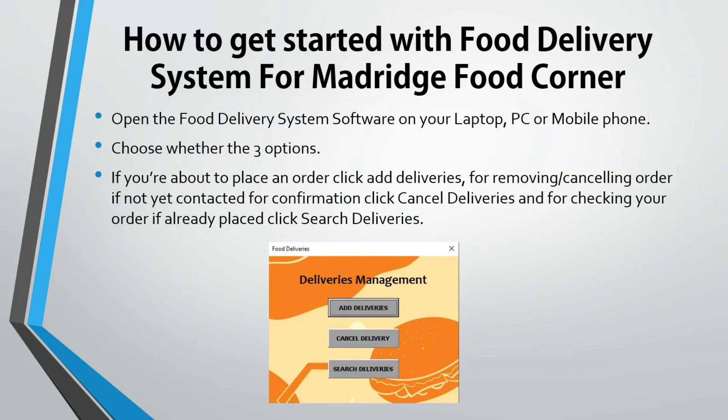How to get started with the food delivery system for Madrid Food Corner. Number 1: Open the food delivery system software on your laptop, PC, or mobile phone. Then choose from the 3 options: if you're about to place an order, click Add Deliveries; for removing or canceling an order if not yet contacted for confirmation, click Cancel Deliveries; and for checking your order if already placed, click Search Deliveries.